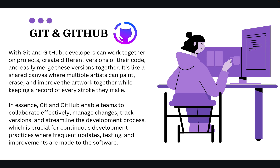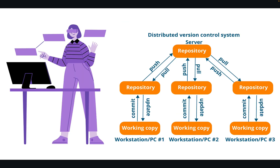In continuous development, we talk about versioning our code. The most popular tool for version control is Git, and GitHub is the repository. We will use Git and GitHub for the version control system, and the second section of this course will describe everything from A to Z about Git and GitHub.